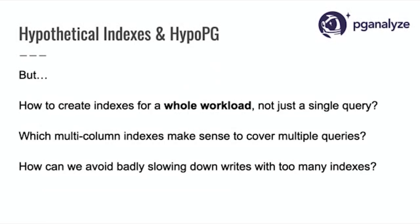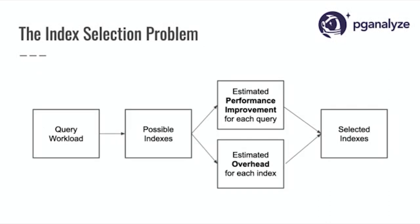The challenge with HypoPG is that it looks at a single query for the most part, so it doesn't really help you think about a workload as a whole. It also doesn't help with tradeoffs — the whole aspect of what are too many indexes, or which multi-column indexes are the right choice. When we think about this index selection problem visually, we go from the query workload on the left — select statements — to the selected indexes on the right. We go from a query workload to which possible indexes could exist, estimate the performance improvement for each query and the overhead for each index, and then run index selection to find the actual indexes we want to keep.